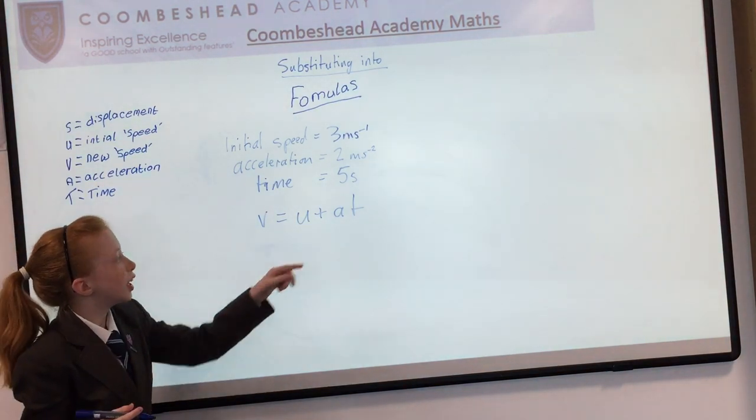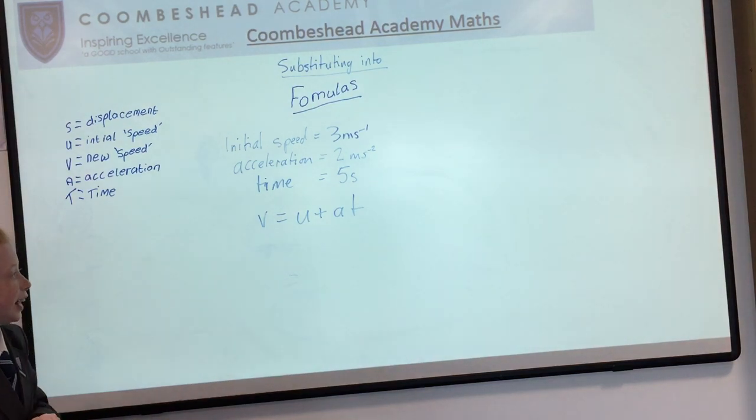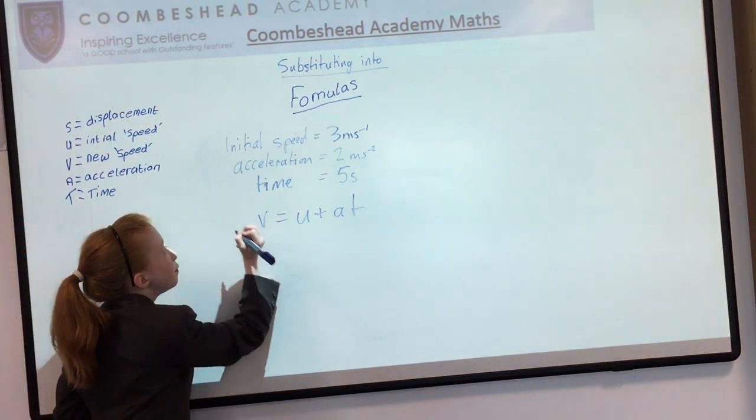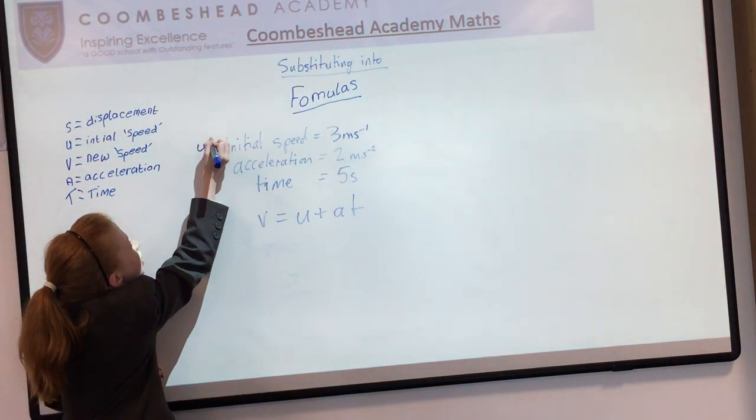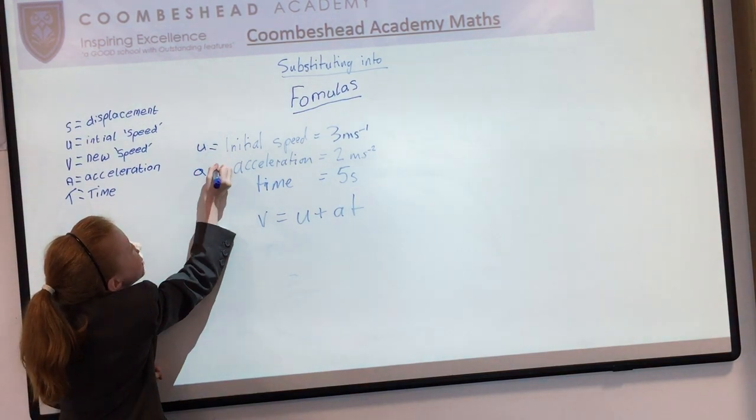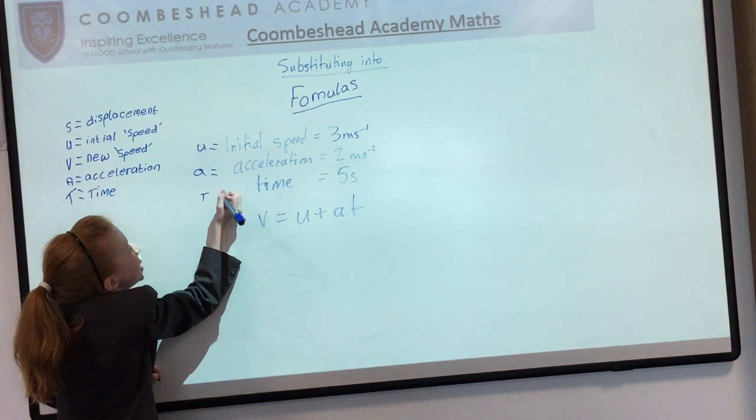So this is our sum which is V equals U plus AT. So we have U here, A is acceleration and T is time.